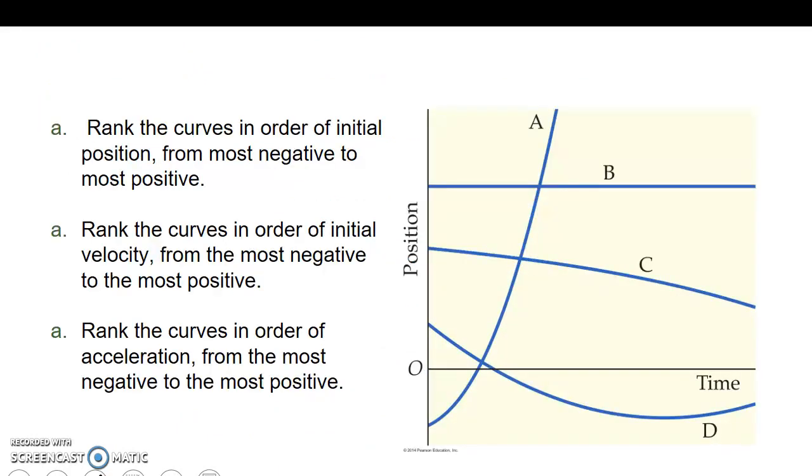Let's rank these curves in order of initial position from most negative to most positive. The most negative initial position is right here, A. Then D. Then C. Then B. That's most negative to most positive.